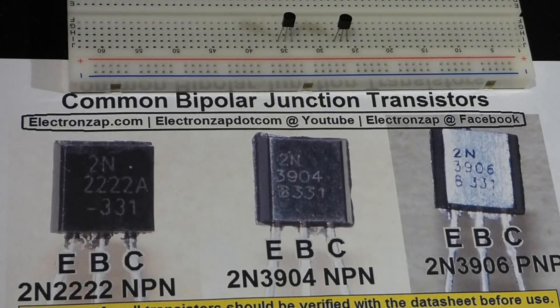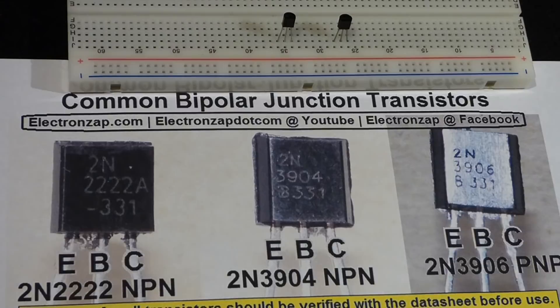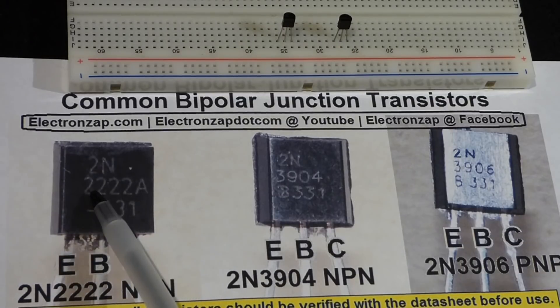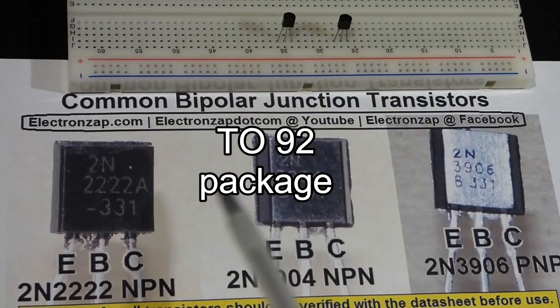This video is going to be a quick lecture on the bipolar junction transistor and I'm going to use this diagram that I put together a while ago. To begin with, when you're doing hobbyist and prototyping circuits, you generally use transistors that come in this packaging. This is called the TO-92 packaging.